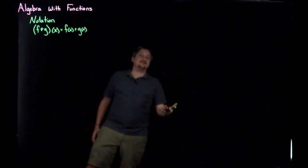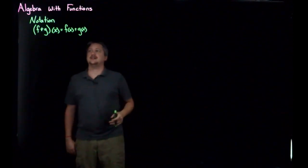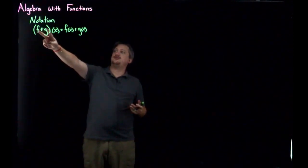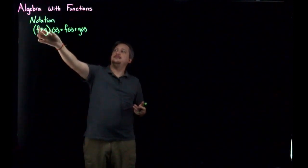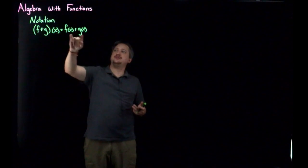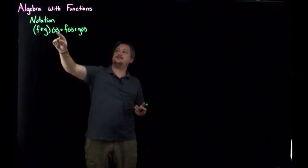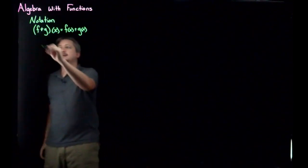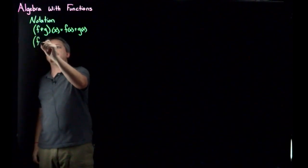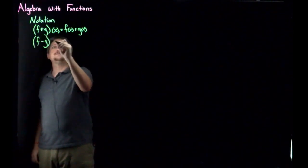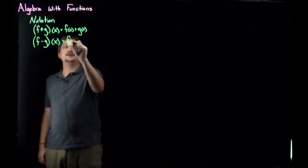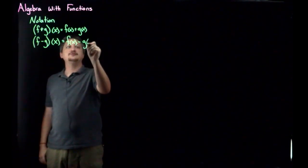What we mean by F plus G applied to X is that we take F of X and add G of X, so we get F of X plus G of X. This is what we would call a pointwise definition. F plus G as a function is really just applying each of them separately to the input and then adding the result. Likewise, F minus G applied to X equals F of X minus G of X.